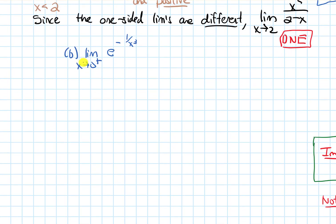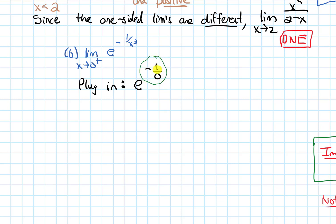Let's look at part b: the limit as x approaches zero from the right of e to the negative one over x cubed. We begin by plugging in, which gives e to the negative one over zero. We have a non-zero over zero situation happening in the exponent. Typically this would mean we evaluate one-sided limits, but our limit is already one-sided, so we just consider this one side.